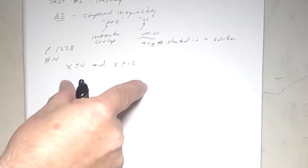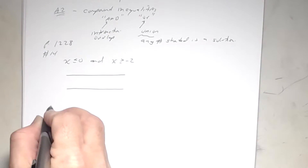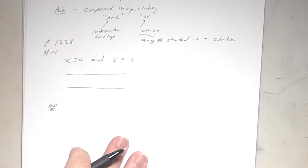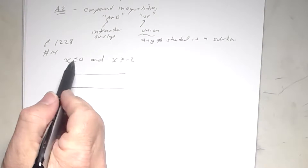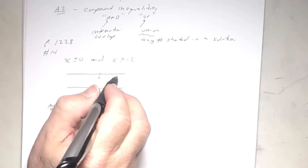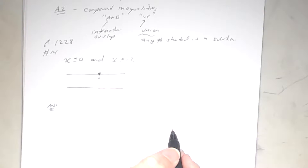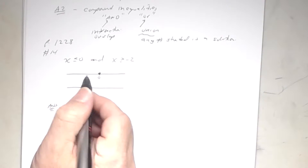When you solve this compound inequality, you're going to graph each one individually. In MyMathLab there will be several graphs — the first graph, then another graph, then your final answer. For the first inequality, the solutions are any number less than or equal to zero. Use a closed circle at zero. Make sure your circles are clearly open or closed — if I have to guess, I'll mark it wrong.